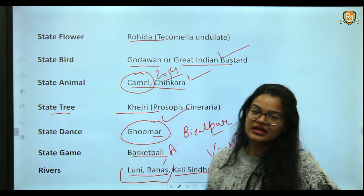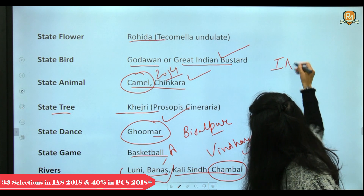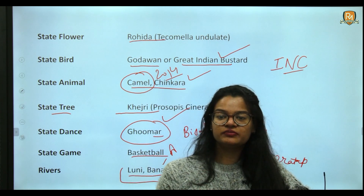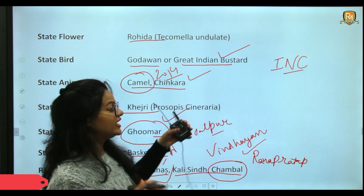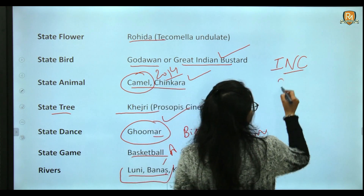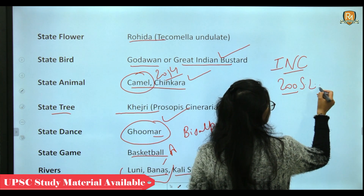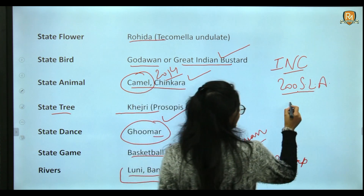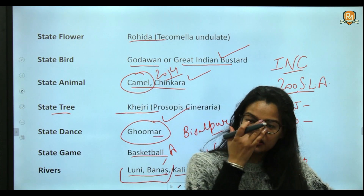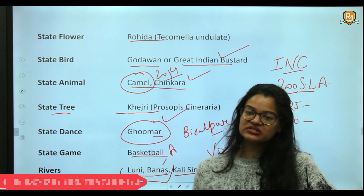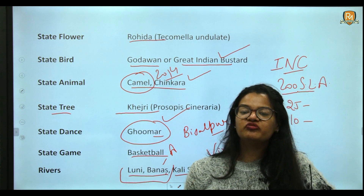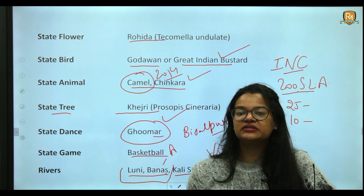Rajasthan's present CM is Ashok Gehlot from the Indian National Congress, with Sachin Pilot serving as Deputy CM, a post he took over in mid-June 2020. Rajasthan has 200 seats in the state legislative assembly, 25 Lok Sabha seats, and 10 Rajya Sabha seats. It follows a parliamentary form of government with a unicameral legislature — there is no legislative council in Rajasthan.